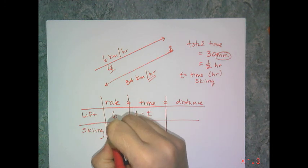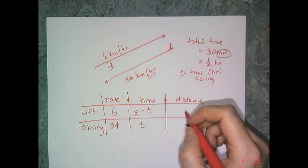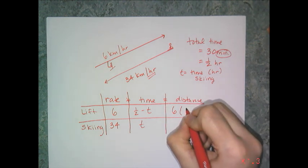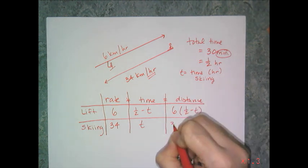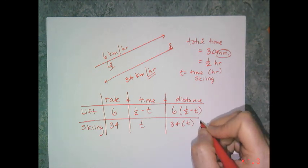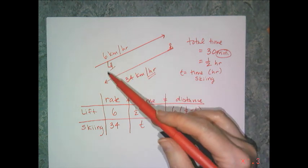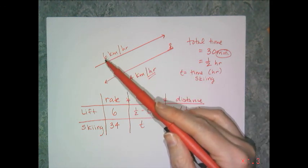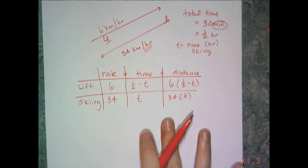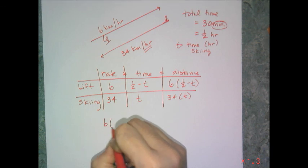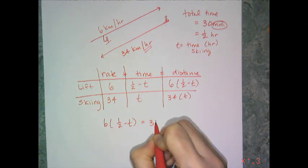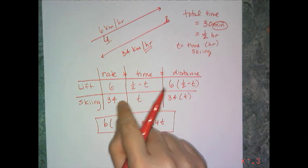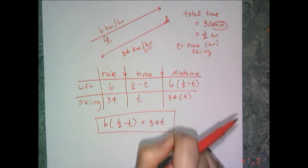The lift time is one-half minus T. The rates are 6 and 34, and the distances are 6 times (one-half minus T) and 34T. The key to a round trip problem is that the distance going and the distance coming back must be equal. So: 6 times (one-half minus T) equals 34T. Solving gives the skiing time, and then 34T gives the distance.